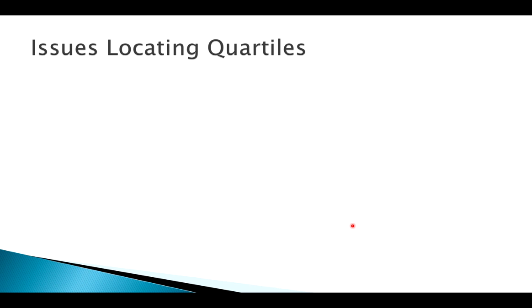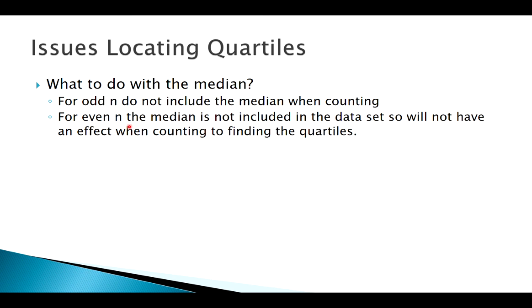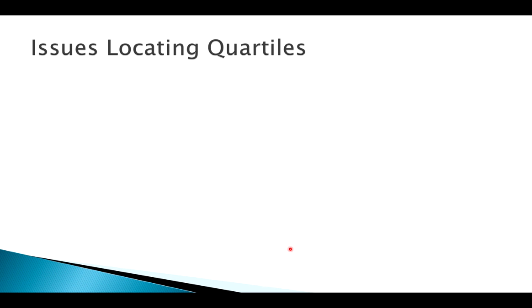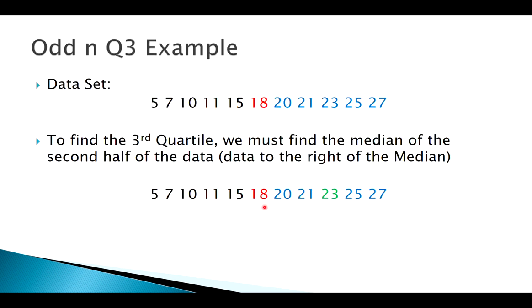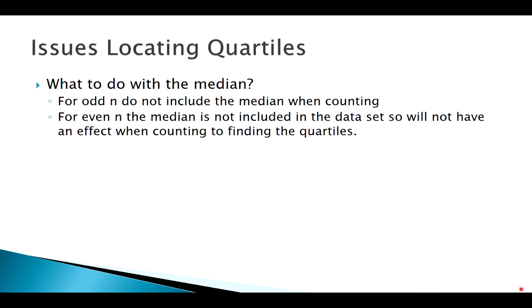So that is really the only issue that we see when finding quartiles. If n is odd, what do I do with the median? I don't include it when counting, right? When n is even, we won't run into that problem. The other problem, now in this example, our median divided our data in half, and we had a lower half and an upper half, both of n equal to 5, right? And that's an odd number, so we were easily able to find that median. The median is included in the data set.